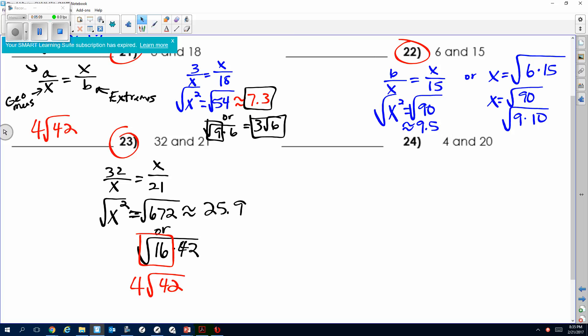So this would be 4 square root of 42, which is approximately 25.9. Okay, so you're going to have two problems—one multiple choice, one open ended—with two number rule.